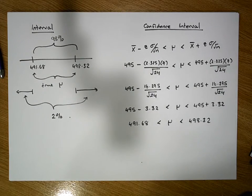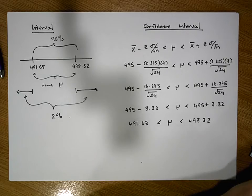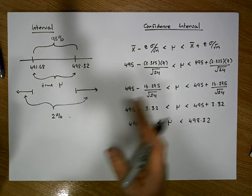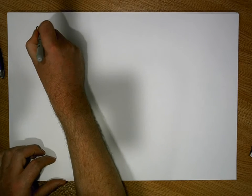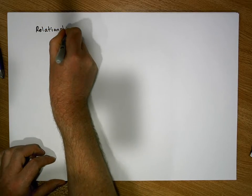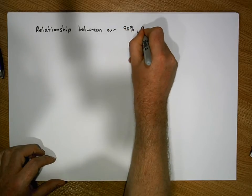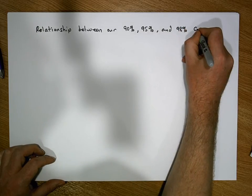This video is part of a series on confidence intervals. We've already constructed a 95% confidence interval and now a 98% confidence interval. Let's have a look at the overall relationship between our 90%, 95%, and 98% confidence intervals.